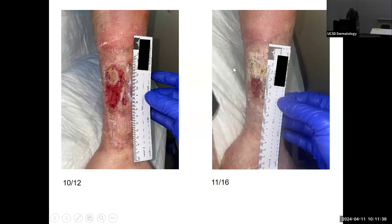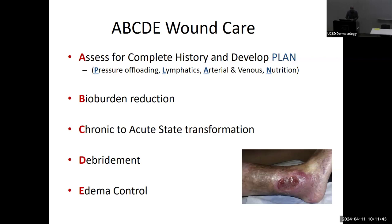From a wound care perspective, I use an ABCDE approach. 'A' is for assessing the patient — a complete history and developing a plan that always addresses: is there a pressure offloading issue, a lymphatic issue, have arterial and venous assessments been performed, and is there a nutrition deficit? 'B' is bio-burden reduction — what efforts am I going to make to minimize the bio-burden?